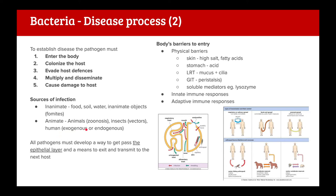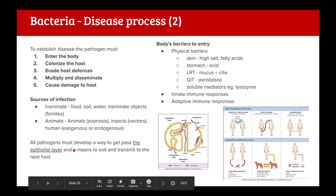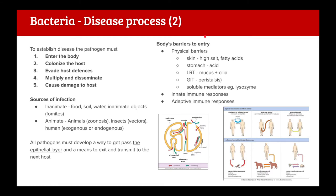For a pathogen to infect the body it must develop a way to bypass the epithelial layer, and must also have a way to exit and transmit to the next host. The body has its own barriers to entry including skin with high salt and fatty acids making it slightly acidic, the very acidic stomach, the lower respiratory tract with mucus and cilia, and peristalsis in the gut. There are also lysozymes and innate and adaptive immune responses.